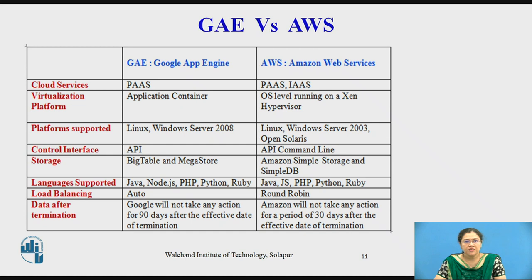Languages supported in both include Java, Node.js, PHP, Python, Ruby, and so on. For load balancing, Google App Engine is automatic, while Amazon uses round robin. Regarding data after termination, Google will not take any action for 90 days after the effective date of termination, but Amazon will not take any action for a period of 30 days after the effective date of termination.